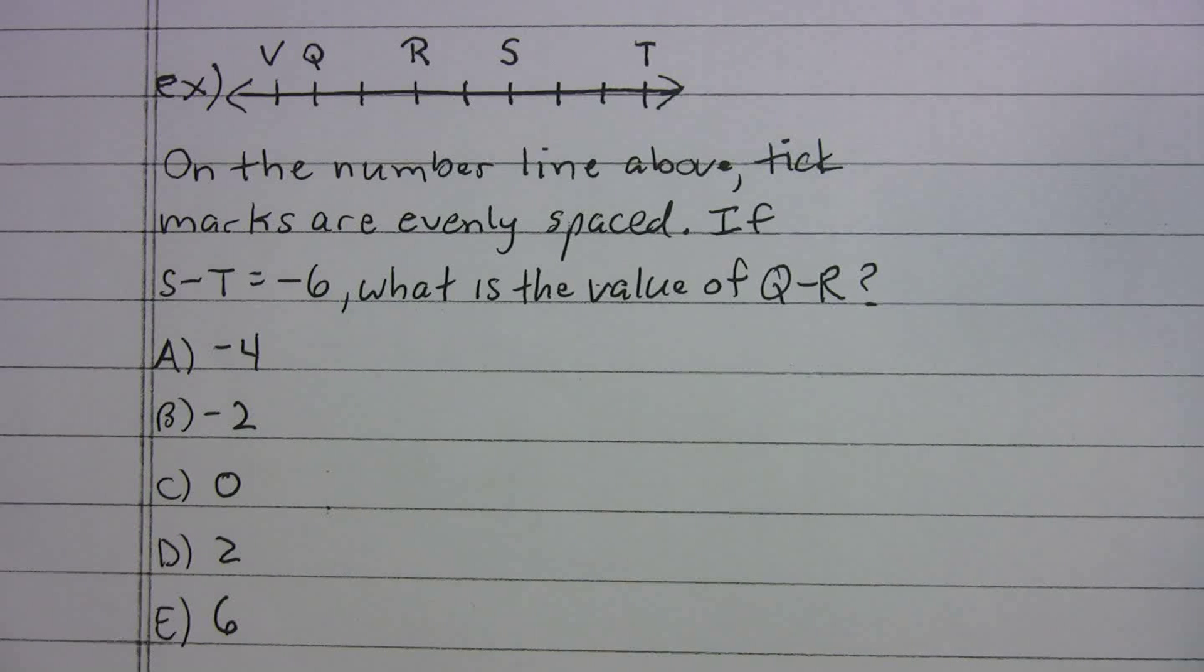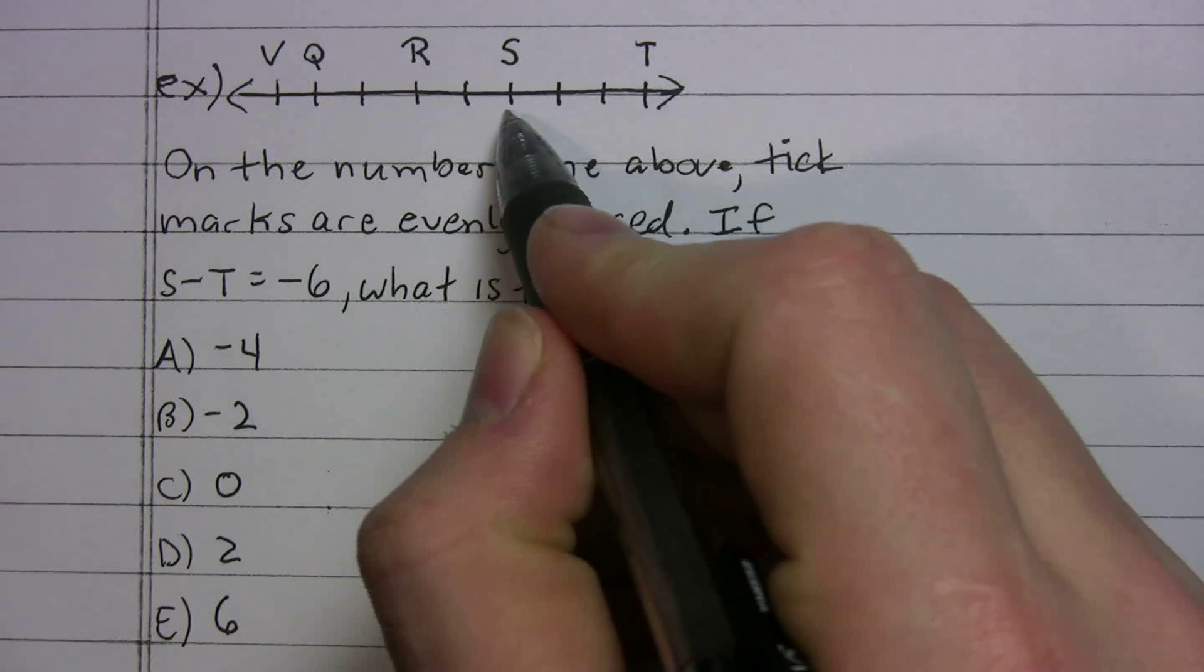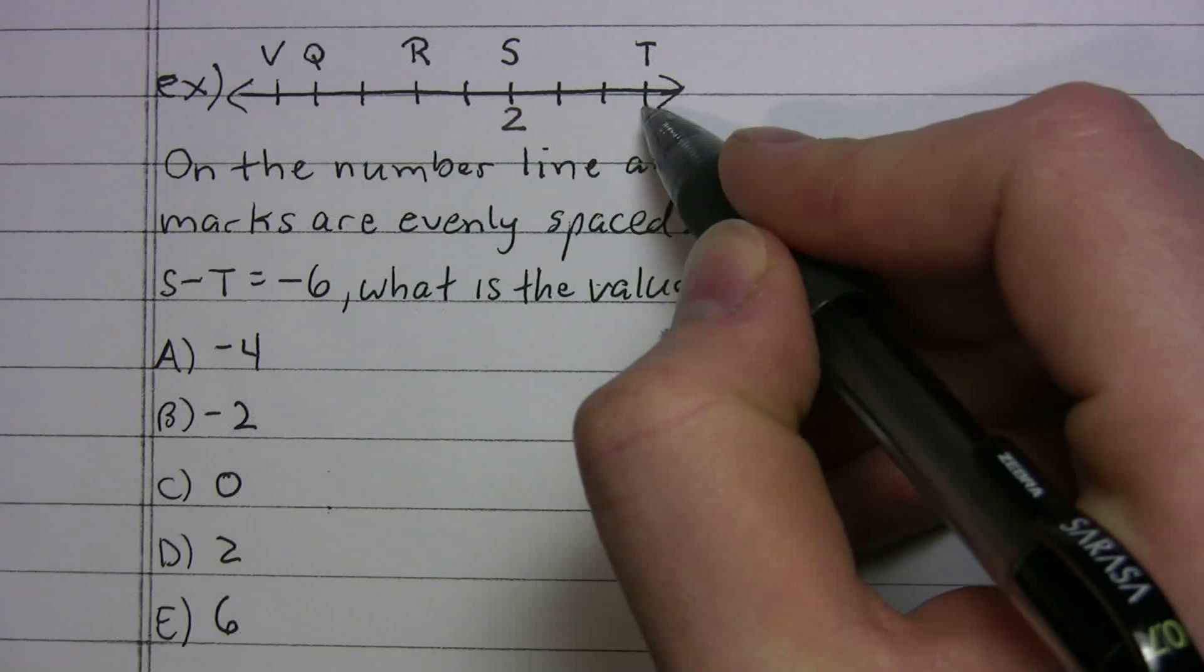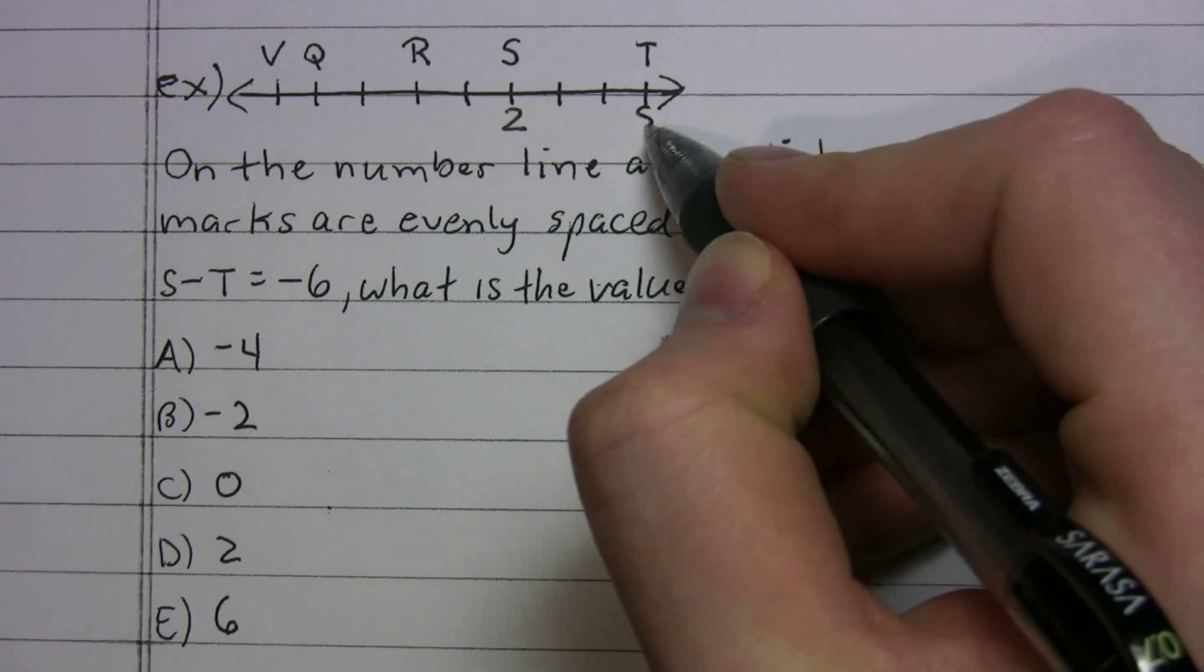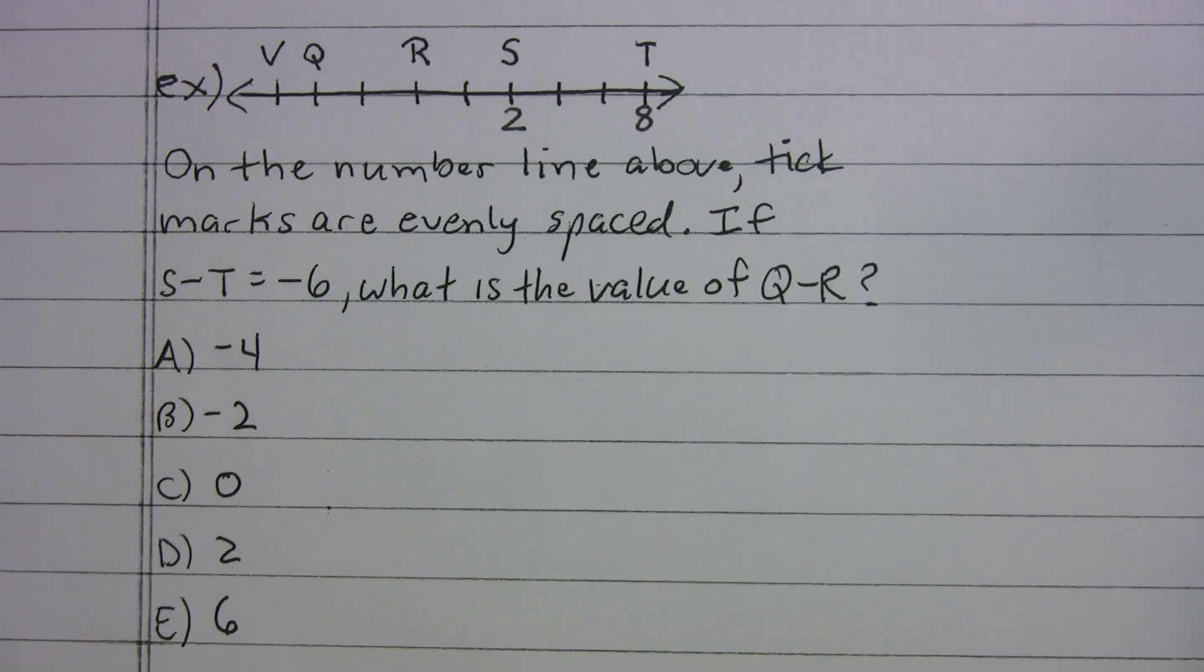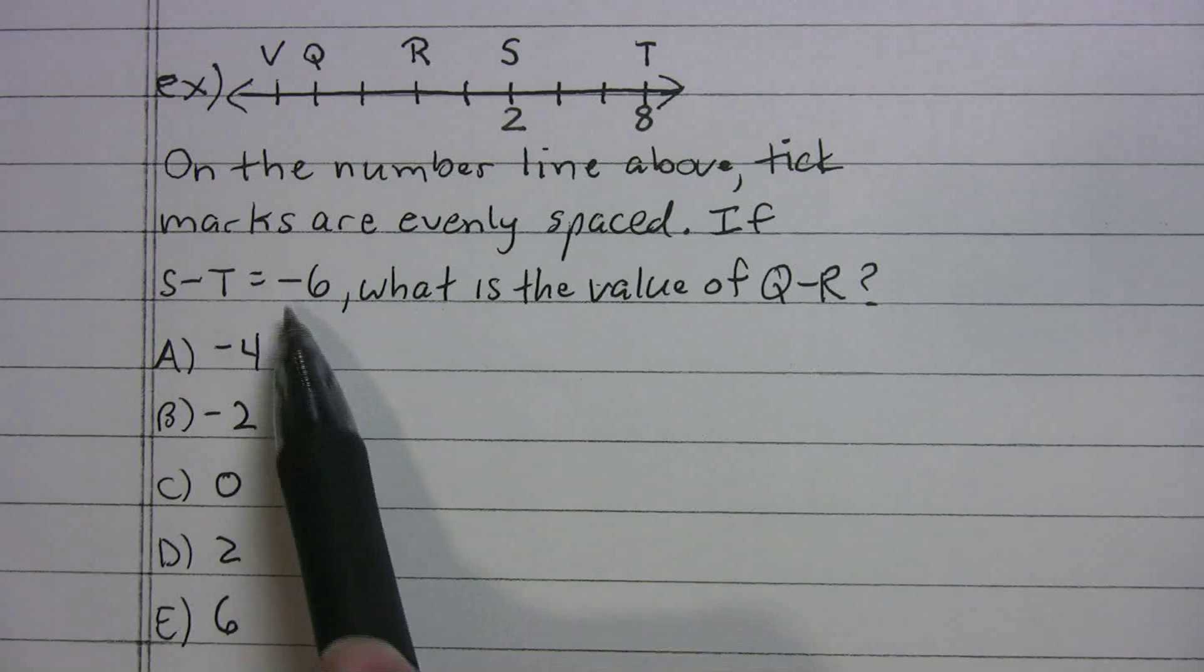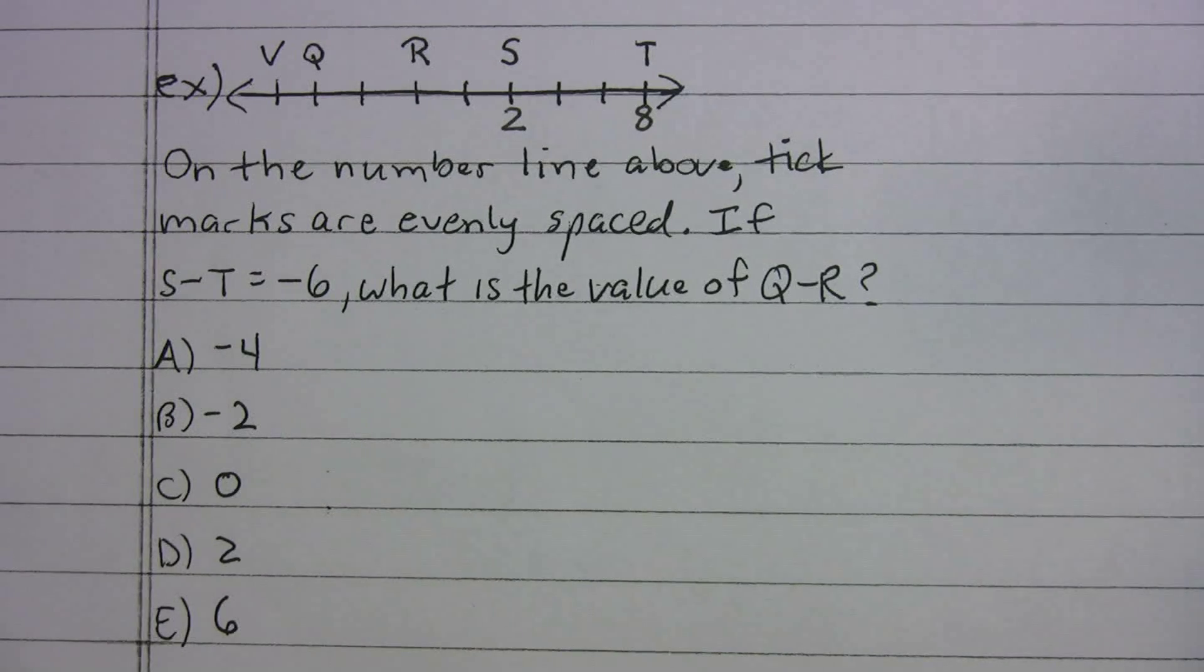So with this problem, what they didn't do, they didn't actually give us any values. The only thing they told us was that s minus t is negative 6. So what I'll suggest is you can choose some numbers and plug them in. So I'll make it easy on myself here. We'll make s equal 2. So 2 minus what gives me negative 6? Well, s minus t, or 2 minus 8. That should make sense, right? 2 minus 8 gives me negative 6. So those numbers work.